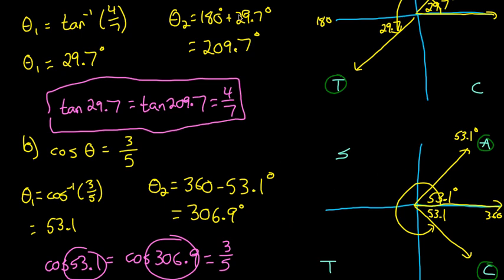For this example with a cosine ratio of 3 over 5, the two angles were 53.1 and 306.9 degrees.